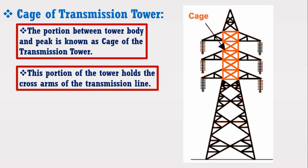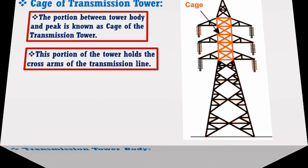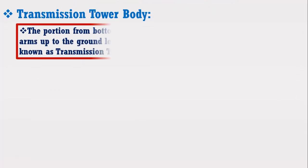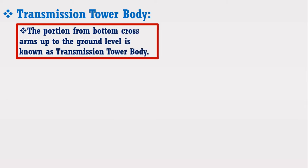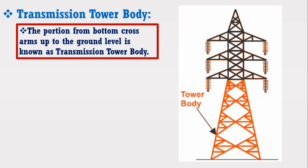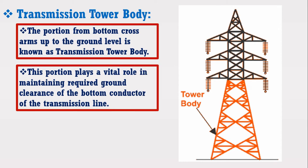Now I am going to discuss the transmission tower body. It can be defined as the portion from the bottom cross arm up to the ground level, known as the transmission tower body. Consider the figure in which the arrow shows the transmission tower body. This body spans from the bottom cross arm up to ground level and plays a vital role in maintaining the required ground clearance of the bottom conductor of the transmission line.